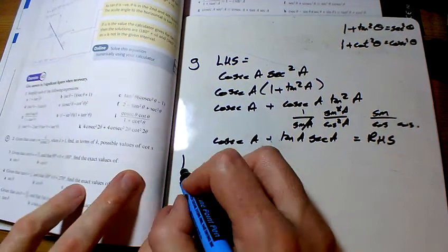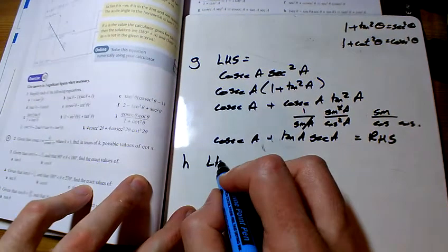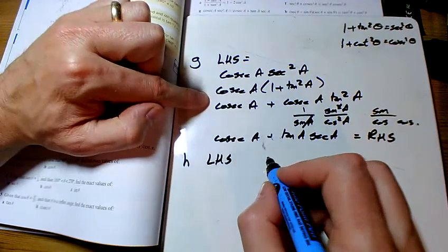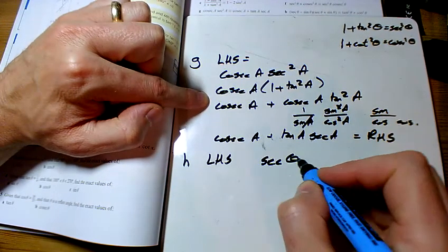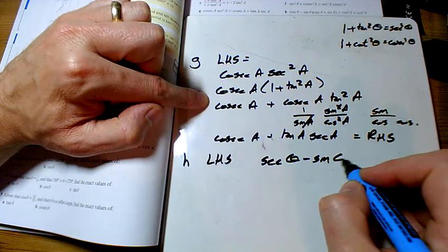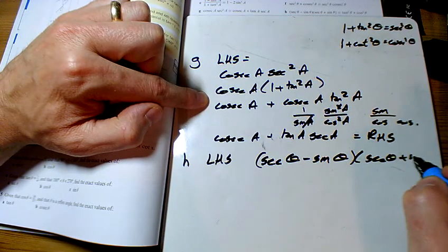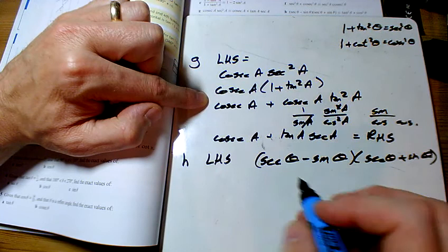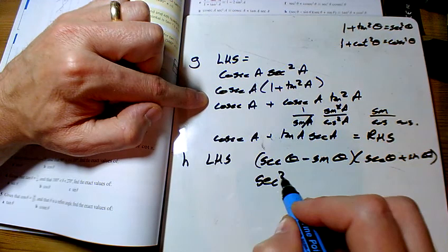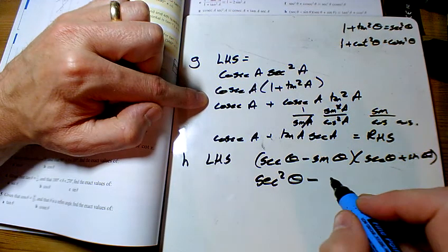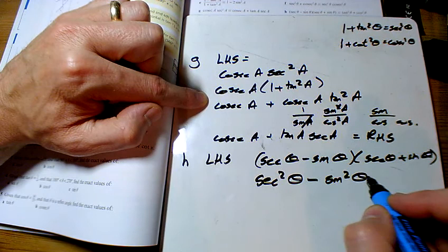And the last one, H, starting in the left-hand side again, clearly going to multiply out the brackets. So I've got sec theta minus sine theta times by sec theta plus sine theta. Multiply that out, I'm going to get a sec squared minus a sine squared, and of course the middle bit will cancel out.